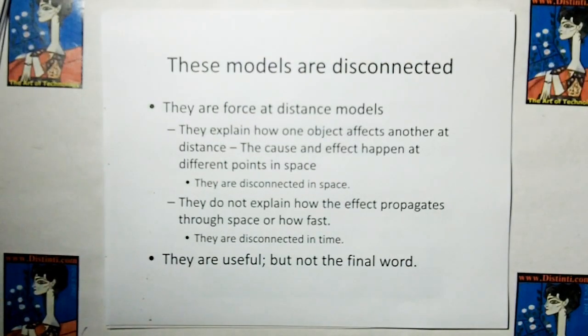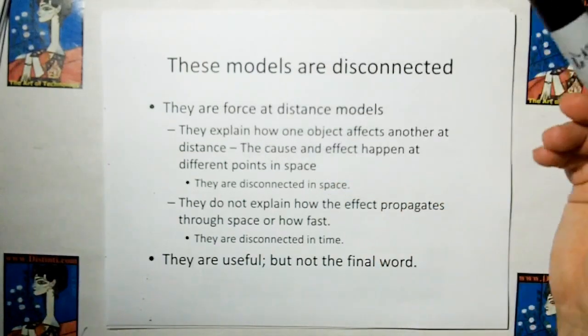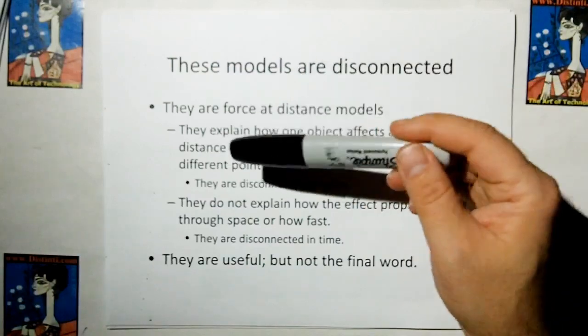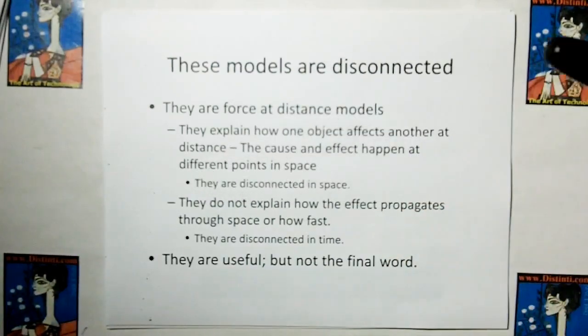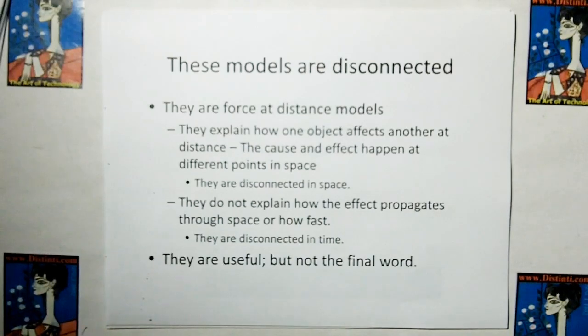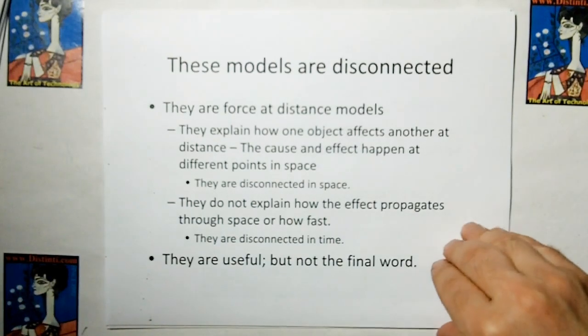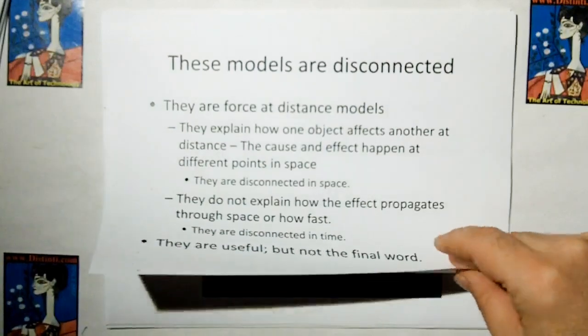So, these models are disconnected because they're force at distance models. They explain how one object affects another at distance. And the cause and the effect happen at different points in space. So they're disconnected in space. And they do not explain how the effect propagates through space or how fast. So, therefore, they're disconnected in time. They're useful, but they're not the final word.